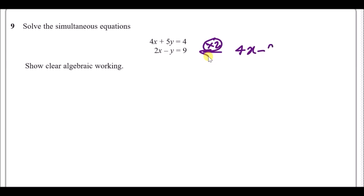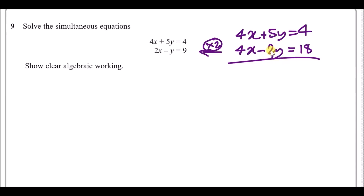Now subtract the equations to eliminate the 4x terms. Subtracting gives: 4x minus 4x cancels, then 5y minus (−2y) is 5y plus 2y which equals 7y, and 4 minus 18 equals −14. So 7y equals −14, which means y equals −2.